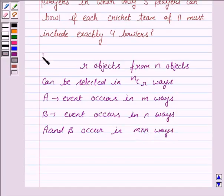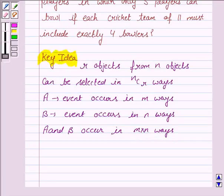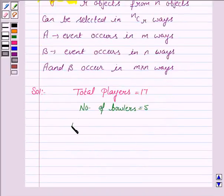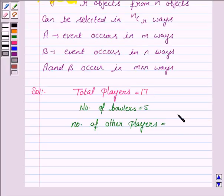So this knowledge will work as the key idea behind this question. Let us now move on to the solution. The total players are 17, and the number of bowlers are 5, and the number of other players is equal to 17 minus 5, that is 12.